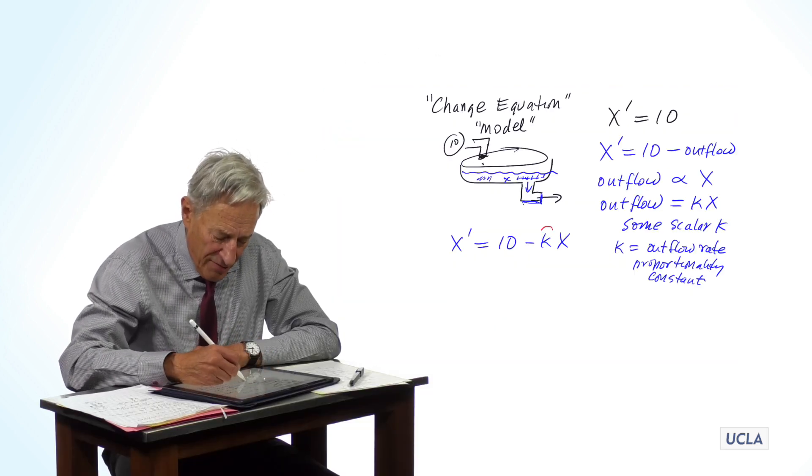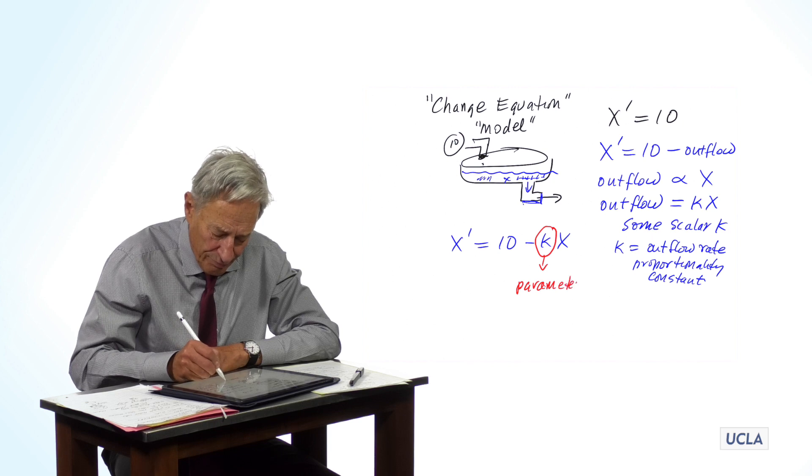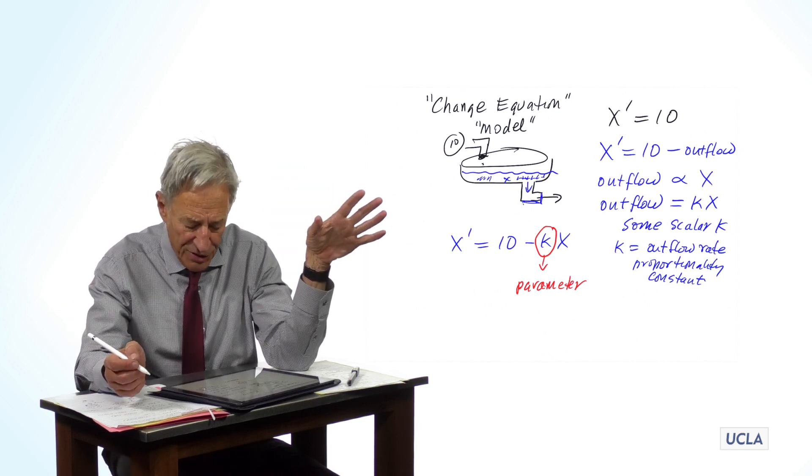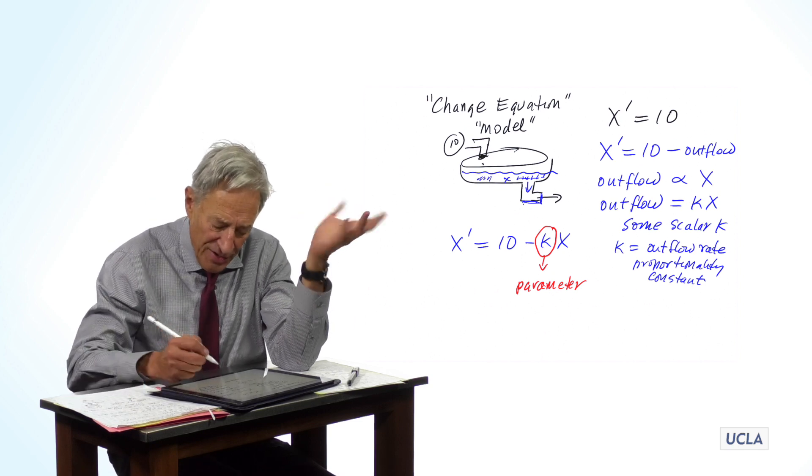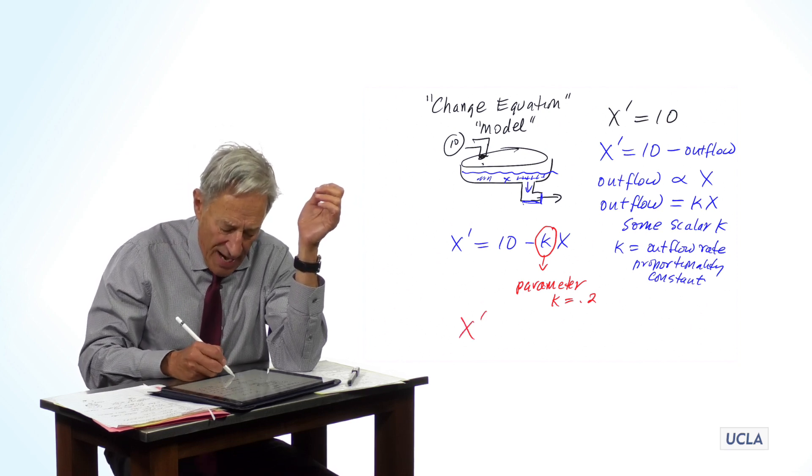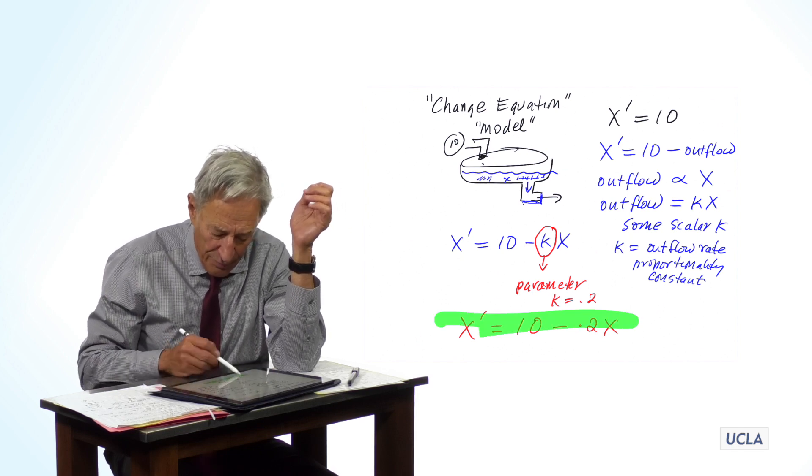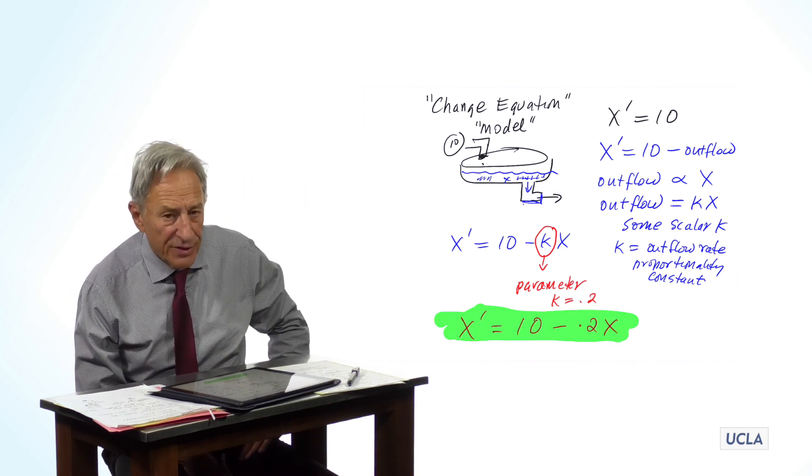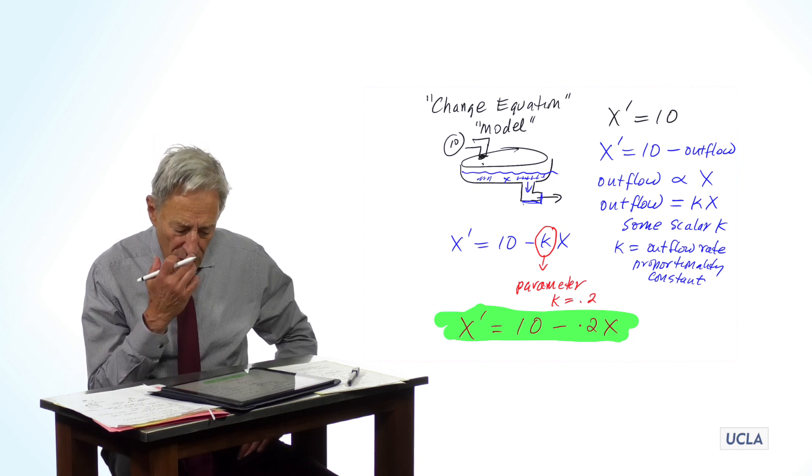k is therefore a very interesting example, and we're going to be seeing this a lot, of what is called a parameter. It's a parameter in our model, which means that we don't yet have a definite equation until we specify a value for k. And that value for k right now will remain fixed. Let's just say k equals 0.2. That then gives us an actual definite model, 10 minus 0.2x. And this is our first sort of interesting model, because you could not immediately tell me what kind of behavior this model predicts.